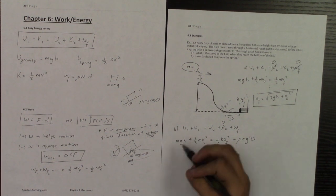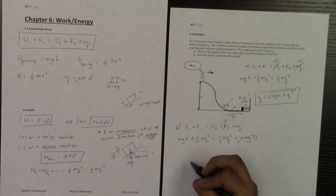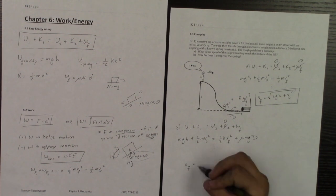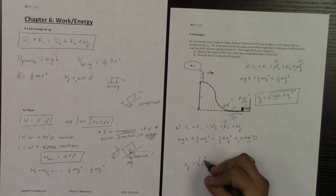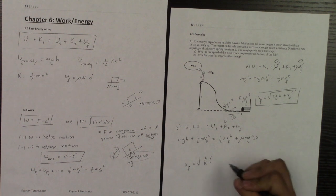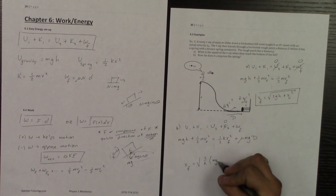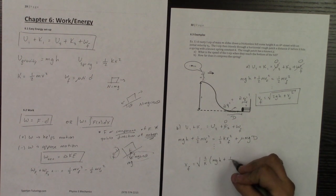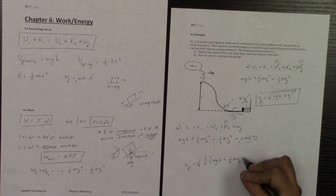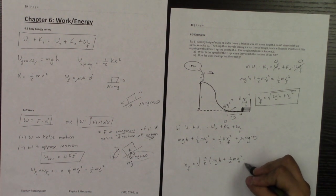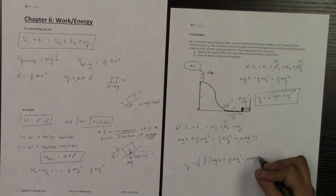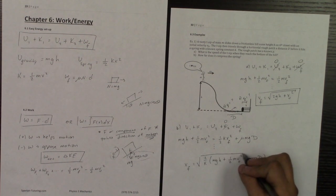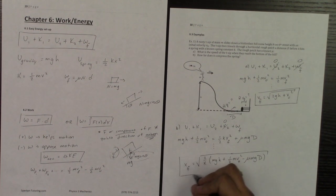And once I've solved everything, you just do a little bit of algebra to solve for that xf. And so subtracting that over, doing all the math and so forth, that xf, if you do your math correctly, will be the square root of 2 over k times and then mgh plus 1 half mv0 squared minus mu mgd. And that would be it. That would be your final answer.